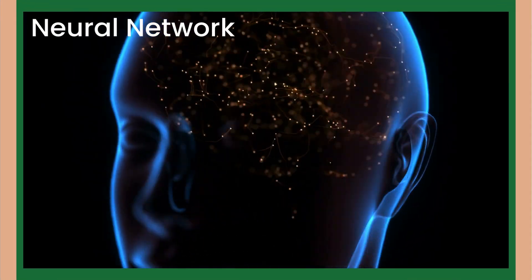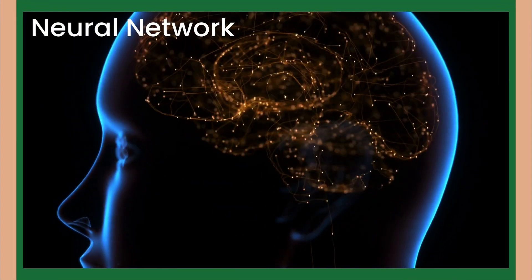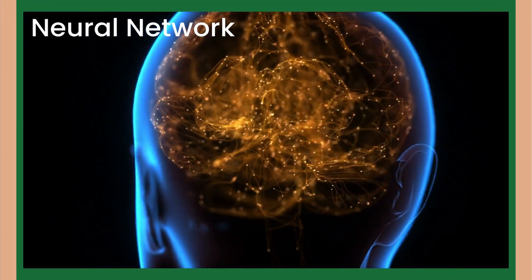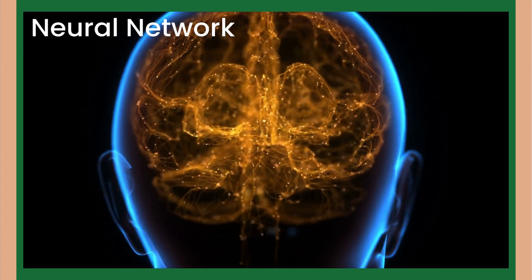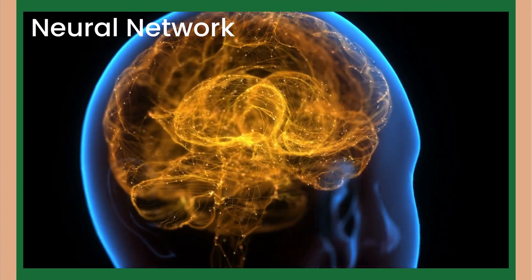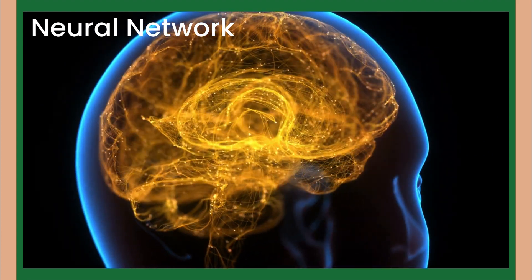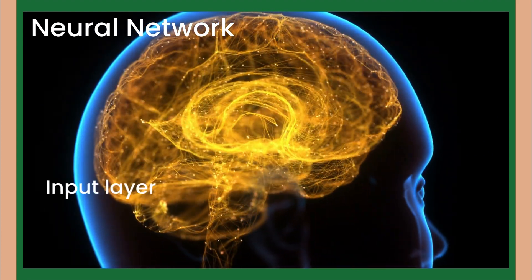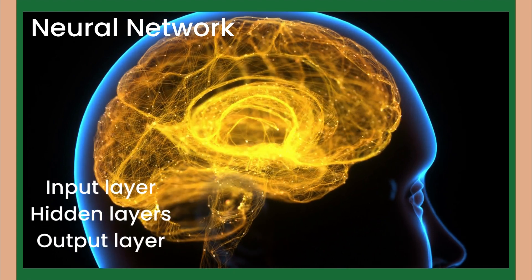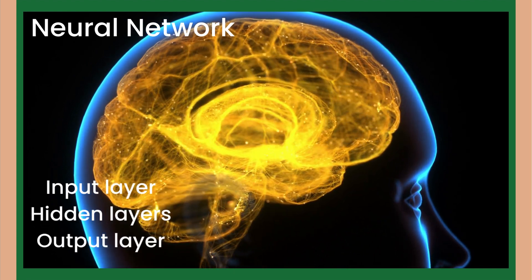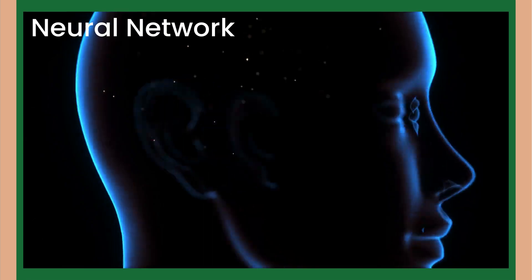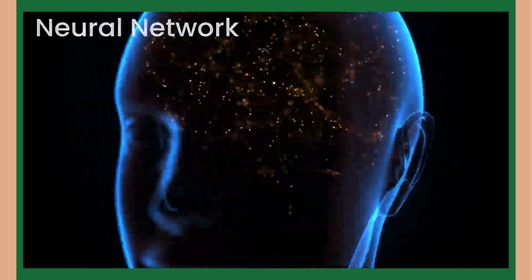Neural networks are inspired by the human brain. They consist of interconnected nodes, or neurons, organized into layers. There's an input layer, hidden layers, and an output layer. Each connection has a weight, and each neuron has an activation function.